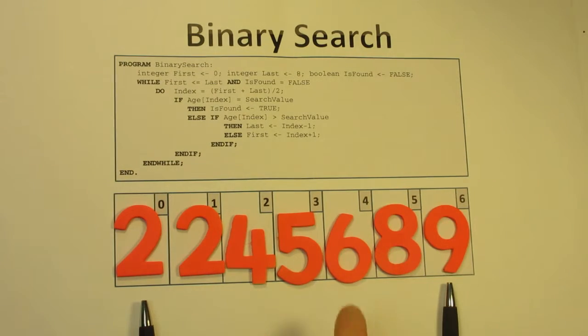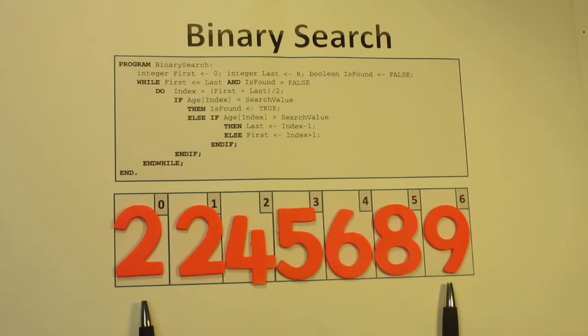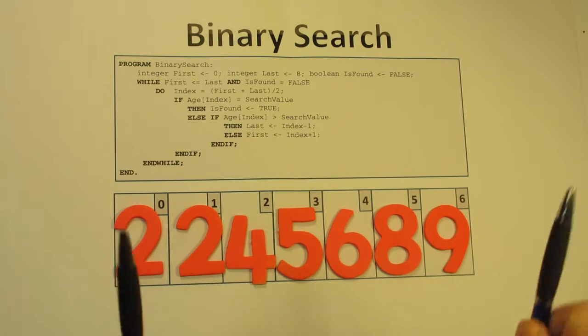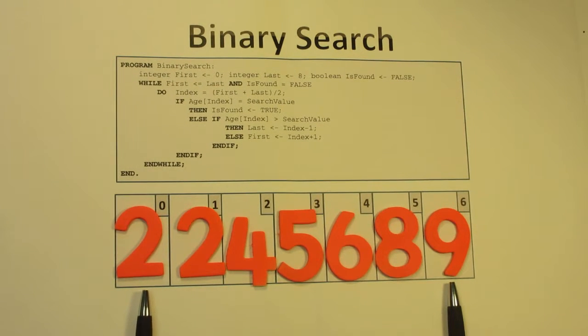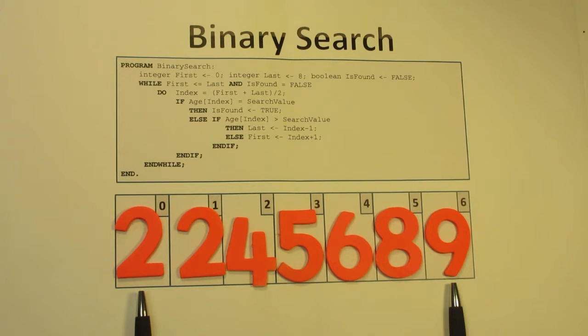We have an array that's completely sorted. What we do is create two variables that we're going to represent with these two pens - one is at the start and one is at the end of the array. Then we calculate the middle of the array, a third value.